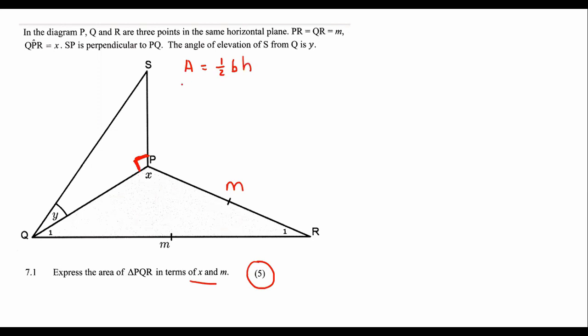The area can either be half base times height, or it could be half AB sin of angle C. Those are the two different formulas that we have for area.